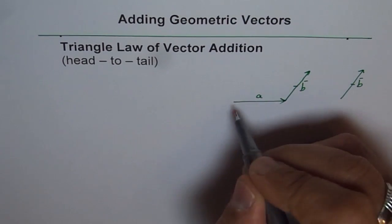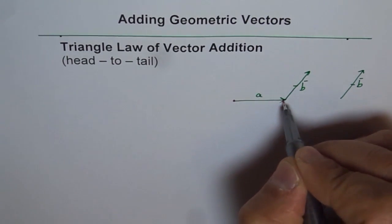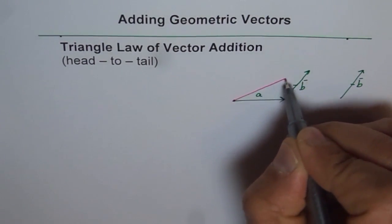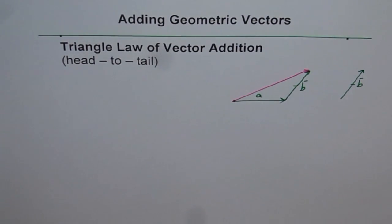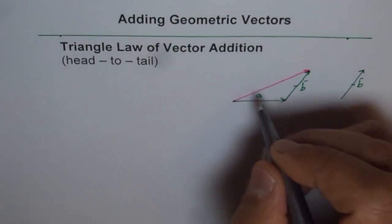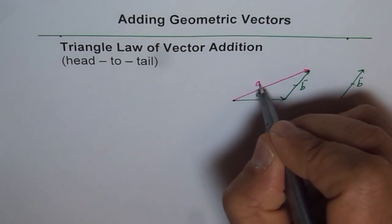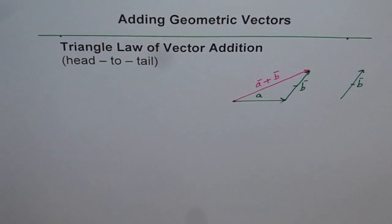Now, from the starting point of vector A — the initial point — to the end point or terminating point of vector B, if we join that distance, it forms a triangle. This length of the triangle is equal to the sum of vector A and B. And that is the triangle law of vector addition.